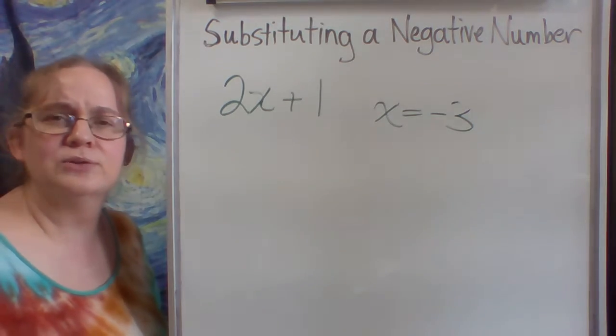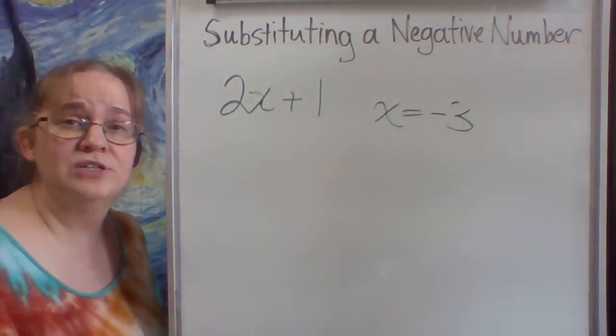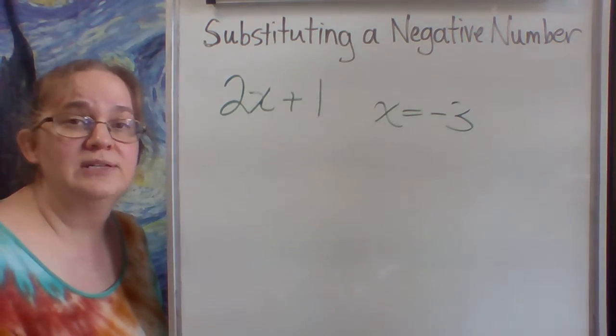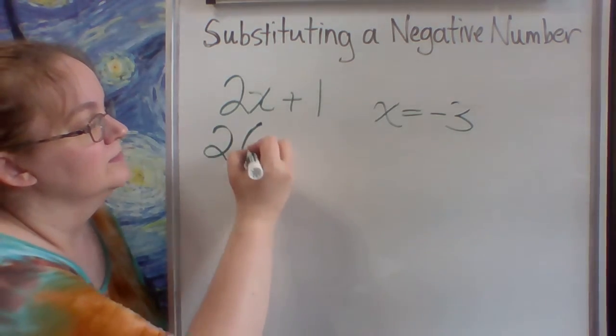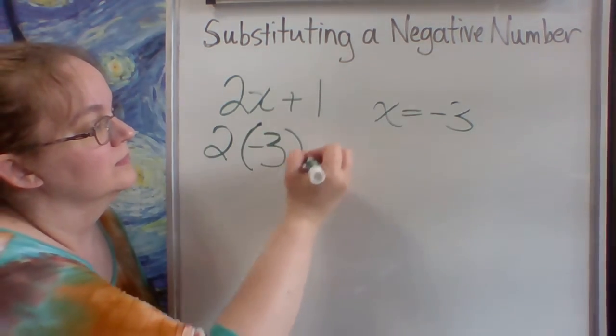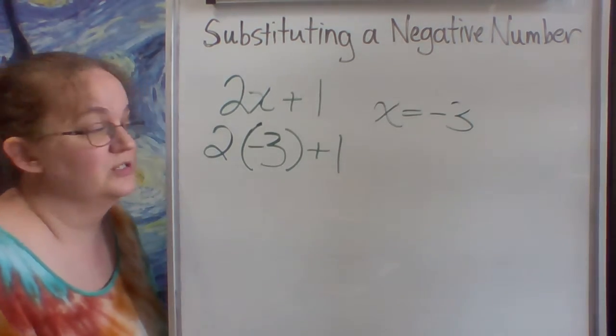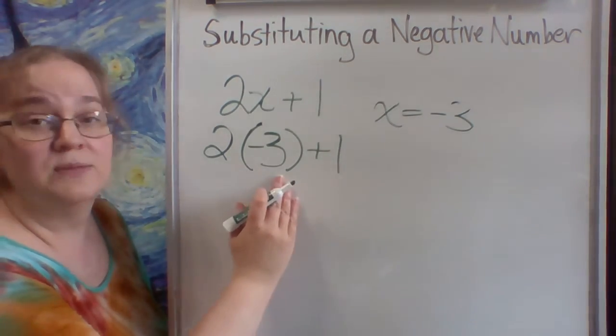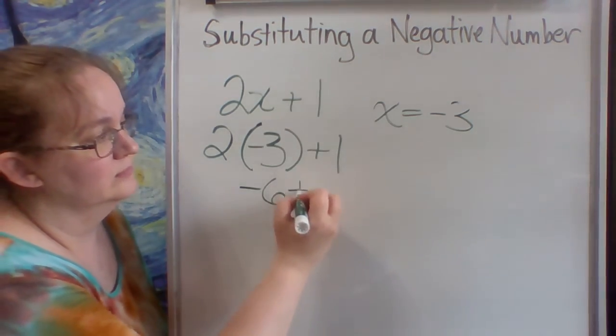Is that 2 minus 3 or is that 2 times negative 3? I don't know. So if you always substitute into parentheses, you will know that it's a negative number and you will make less mistakes. So I just substitute in. And then you can evaluate your expression. So 2 times negative 3 is negative 6 plus 1.